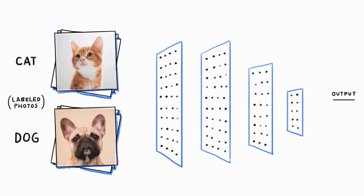Each time you run it through your system, you evaluate it against a loss function, which is basically what you want to learn. For example, if you wanted to build a neural network to distinguish between images of cats and dogs, the first thing you do is get lots of examples of cats with the label 'cats' and lots of examples of dogs, hopefully with the label 'dogs'.